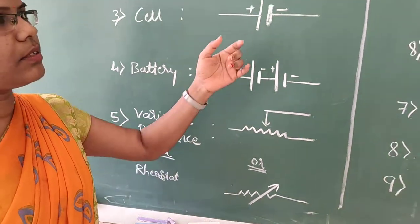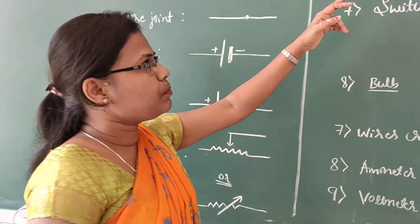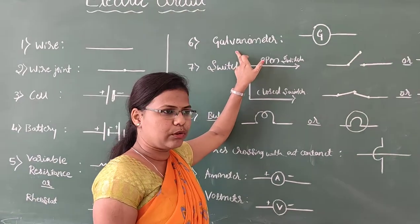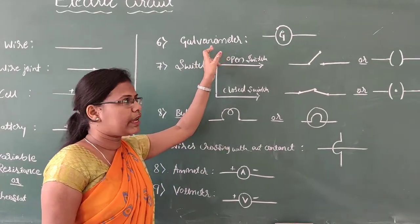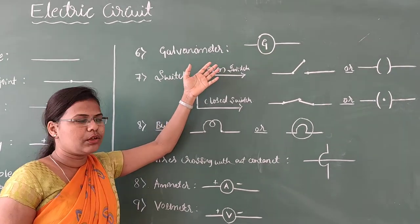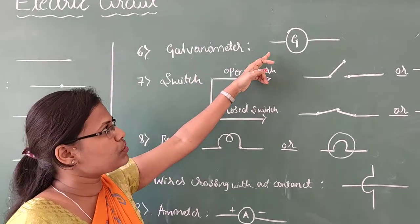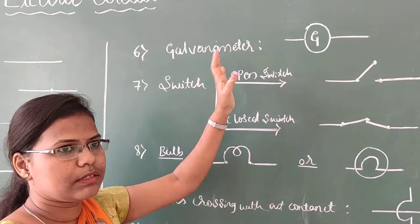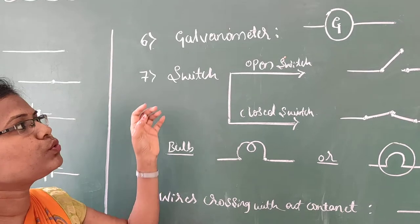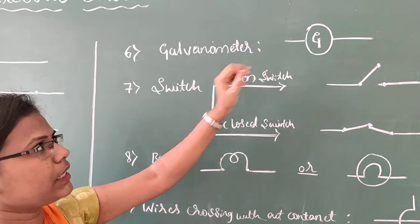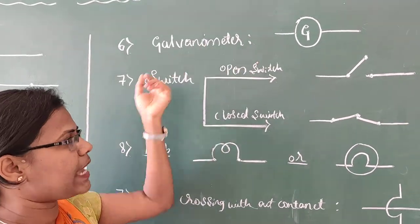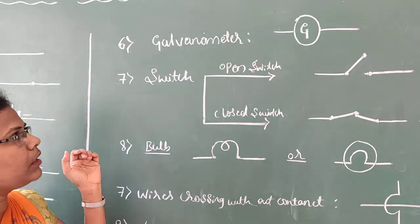Next is the symbol for a galvanometer. A galvanometer is a device which is used to measure or detect the electric current in a circuit.